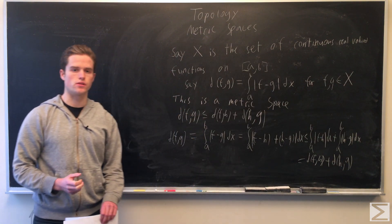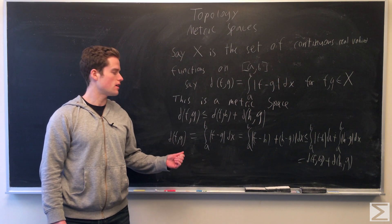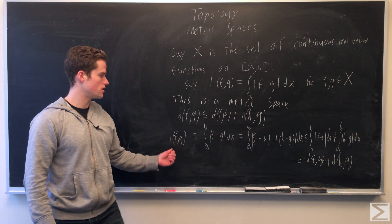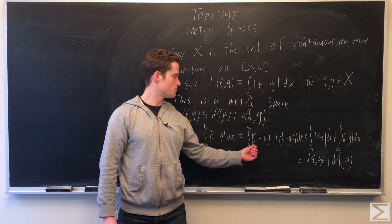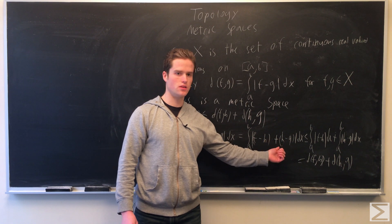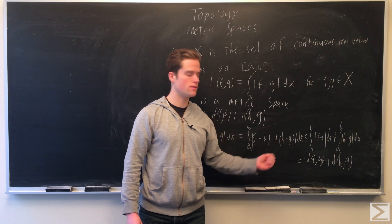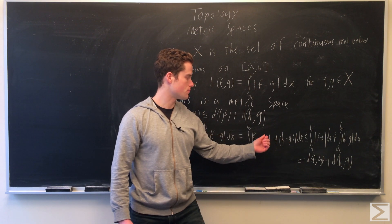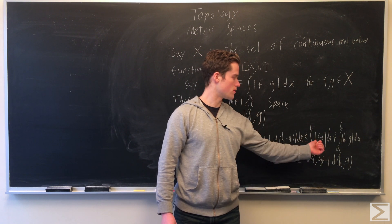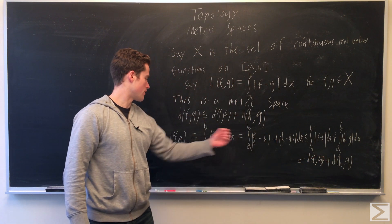For the triangle inequality, we use the fact that the absolute value of a plus the absolute value of b is greater than or equal to the absolute value of a plus b. We write d(f, g) as the integral of the absolute value of f minus g, and rewrite f minus g as (f minus h) plus (h minus g). Setting a equals f minus h and b equals h minus g, this is less than or equal to the integral of the absolute value of f minus h plus the integral of the absolute value of h minus g. These two terms are just d(f, h) and d(h, g), so we have our triangle inequality.